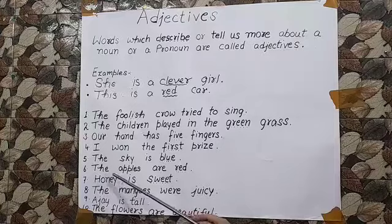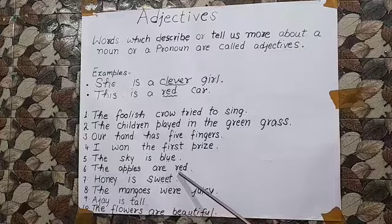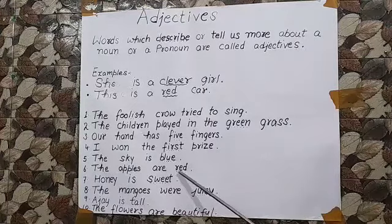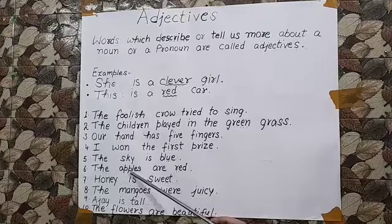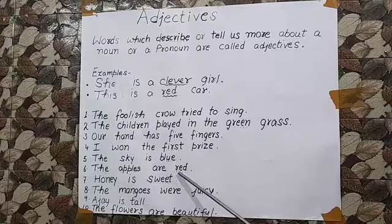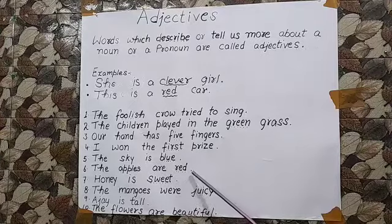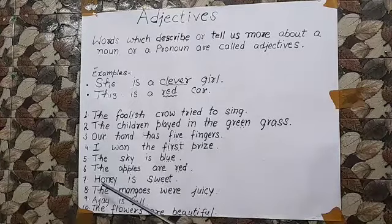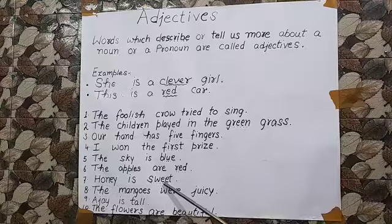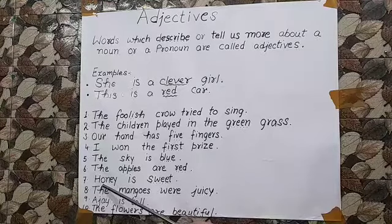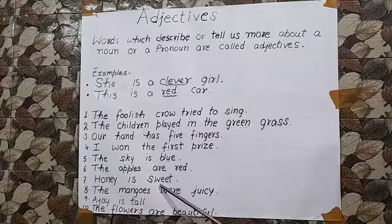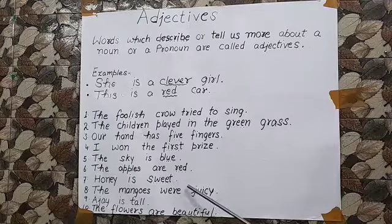Blue is describing the color of the sky, so blue is an adjective in this sentence. The apples are red. Now red is describing the color of the apples, so red is an adjective in this sentence. Now honey is sweet. Sweet is describing about the taste of the honey, so sweet is an adjective in this sentence.